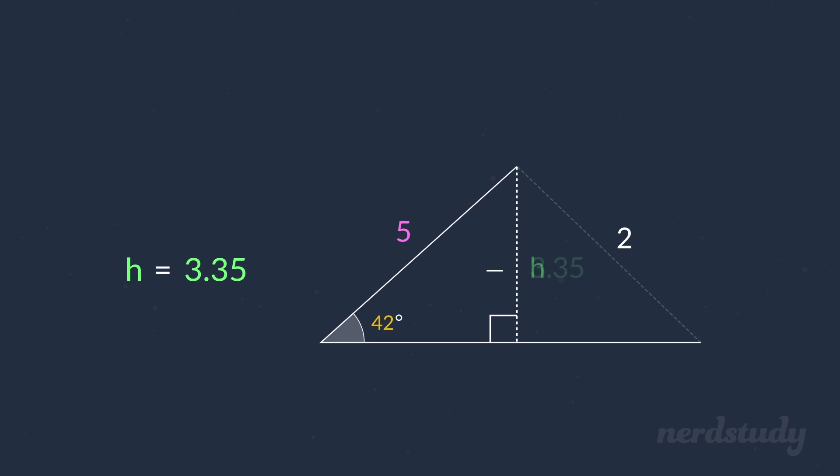So there we have it. Since the length of this side is actually shorter than the length of the height, we know that the triangle would look more like this instead and that there is no triangle created with the given information.